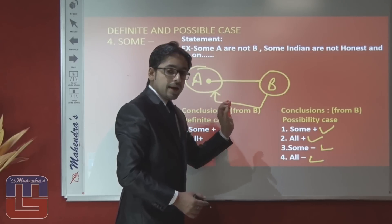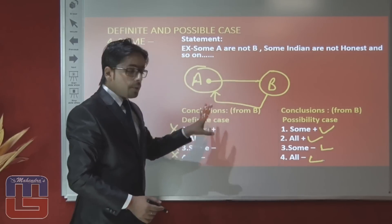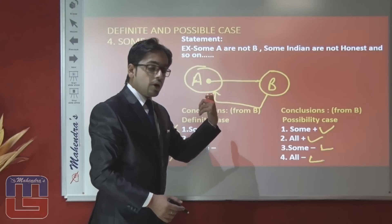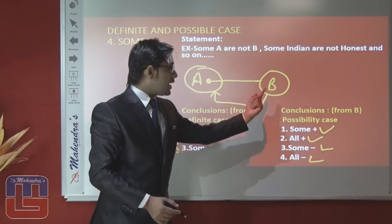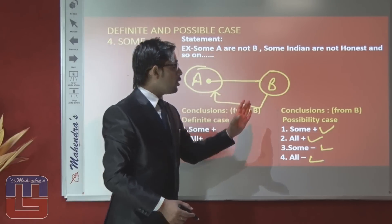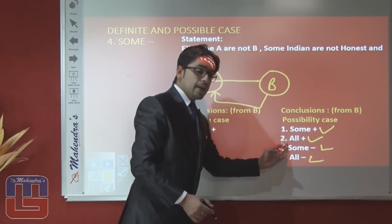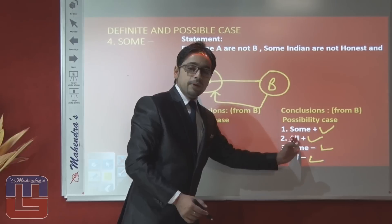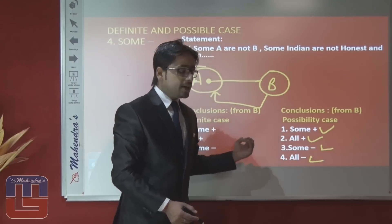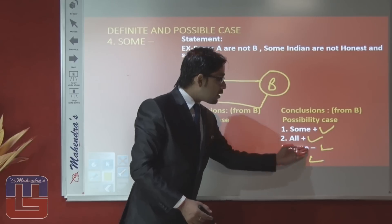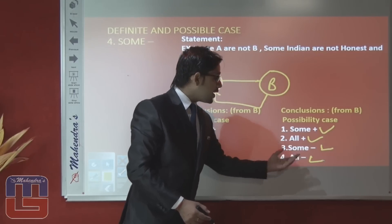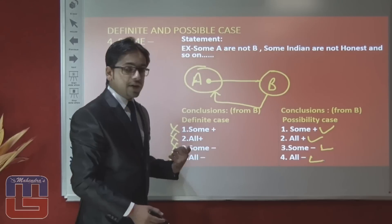If no information is given regarding B to A, then all possibilities are followed: some B can be A (possible), all B can be A (possible), some B are not A is a possibility, and all B are not A is a possibility — all four possibilities regarding B to A are true.